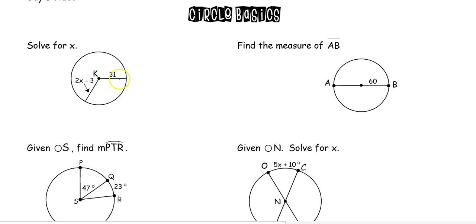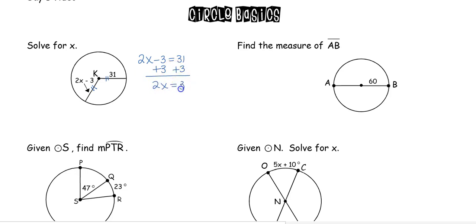We see another radius here — these are both radii, so these two pieces are going to be congruent to each other. So we can set 2x minus 3 equal to 31. We add 3 over: 2x equals 34. We divide by 2, and we get x is equal to 17.